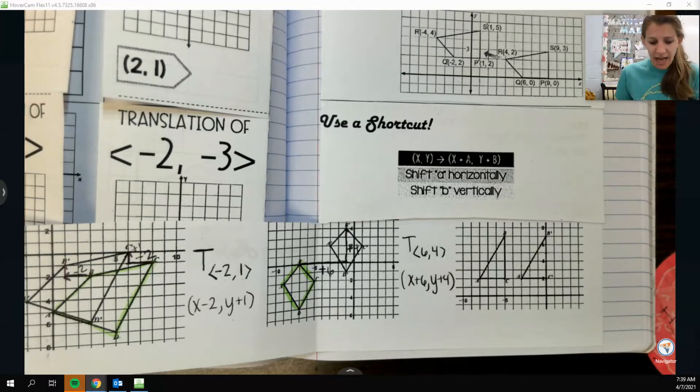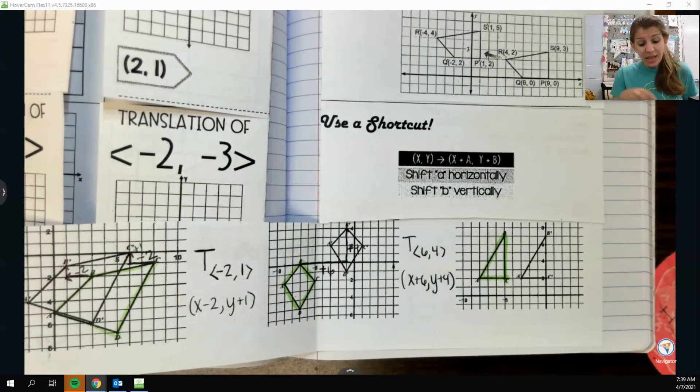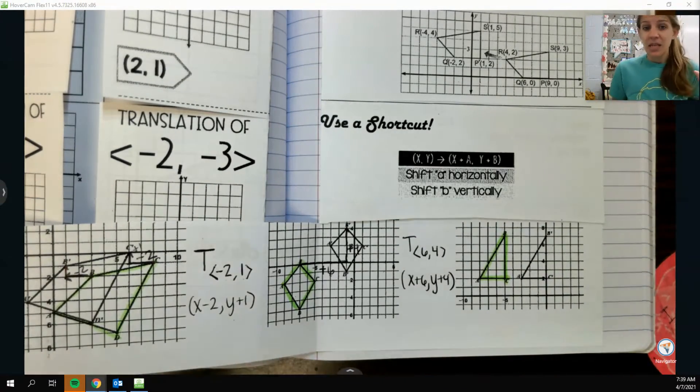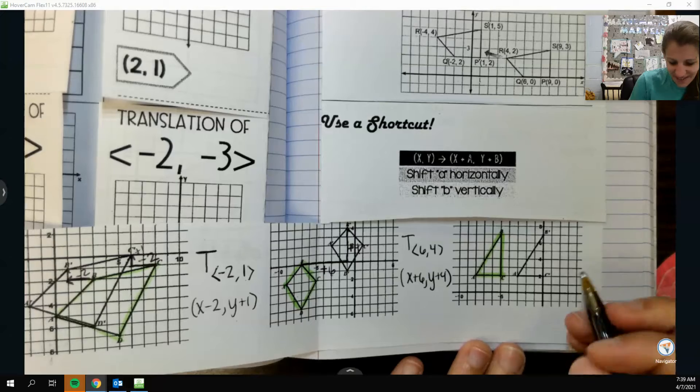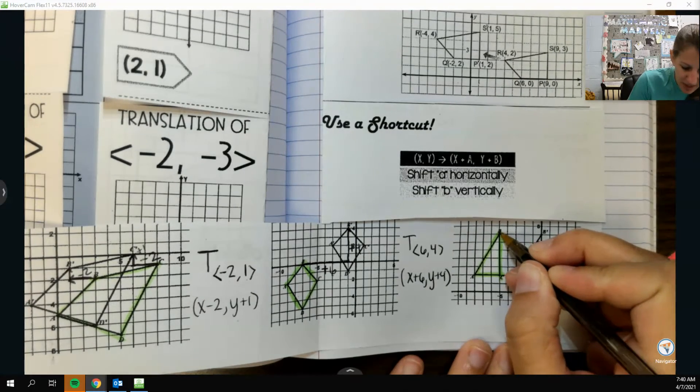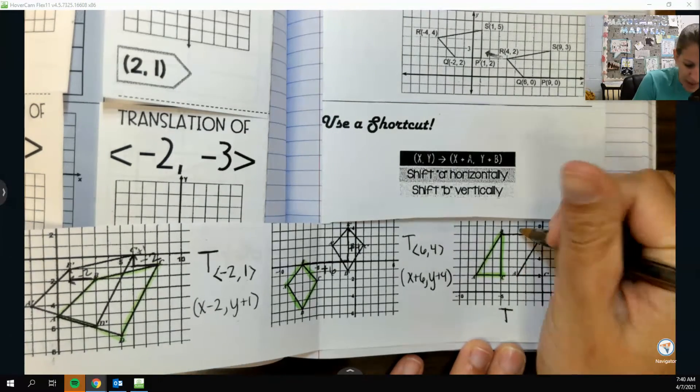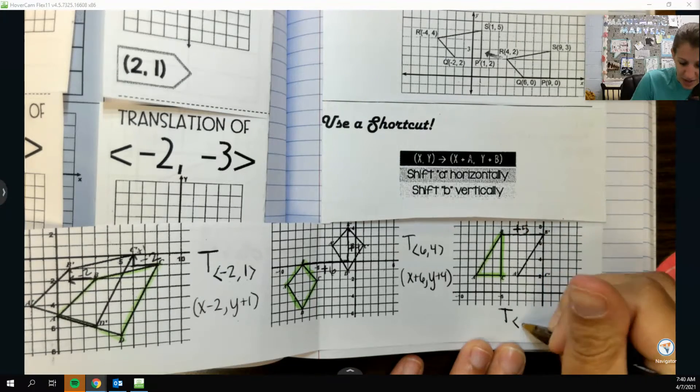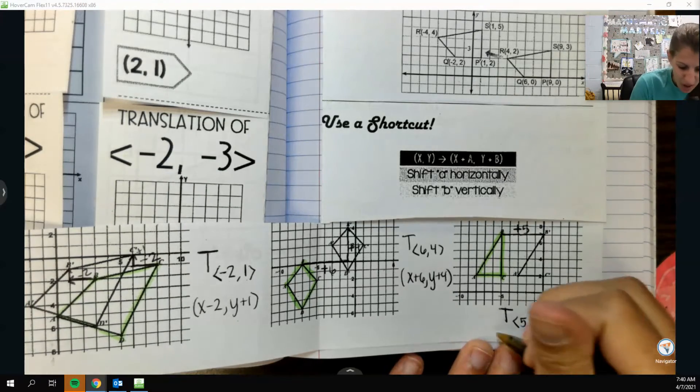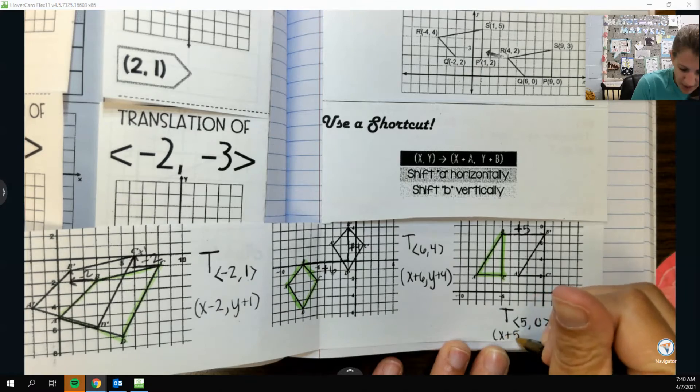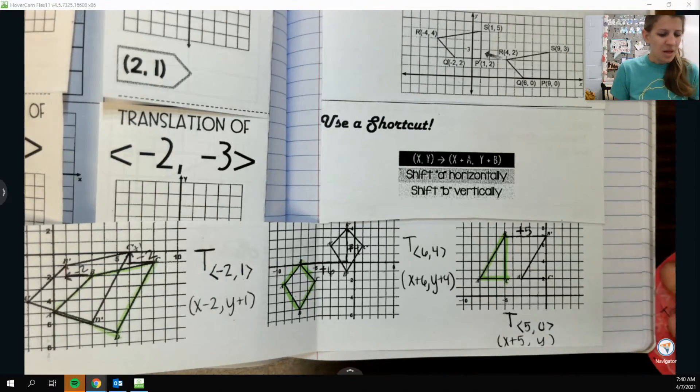And then the last one here, I want to find that pre-image first, and it's right here, because this one doesn't have any primes on it. This one simply was slid to the right. I guess I'll count from b to b prime, and that's just going right 1, 2, 3, 4, 5. Because I only went right 5, and I didn't go up or down at all, I would do 5, 0, because I didn't go up or down at all. Or, in coordinate notation, x plus 5, y plus 0. But you don't really need to put that.